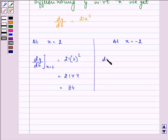Similarly, dy/dx at x = -2 equals 21(-2)² = 21 × 4 = 84.